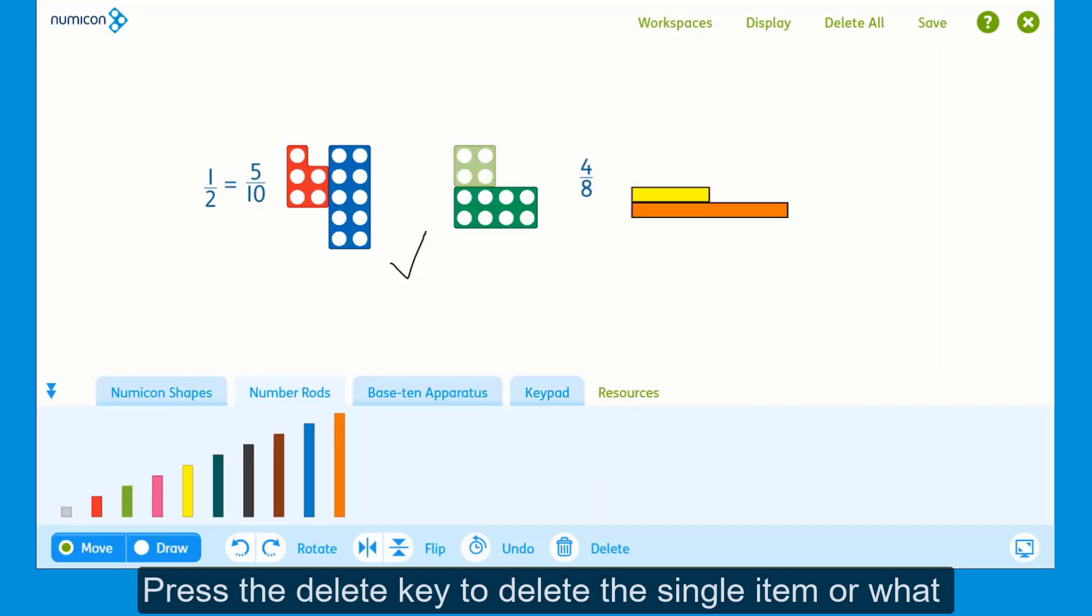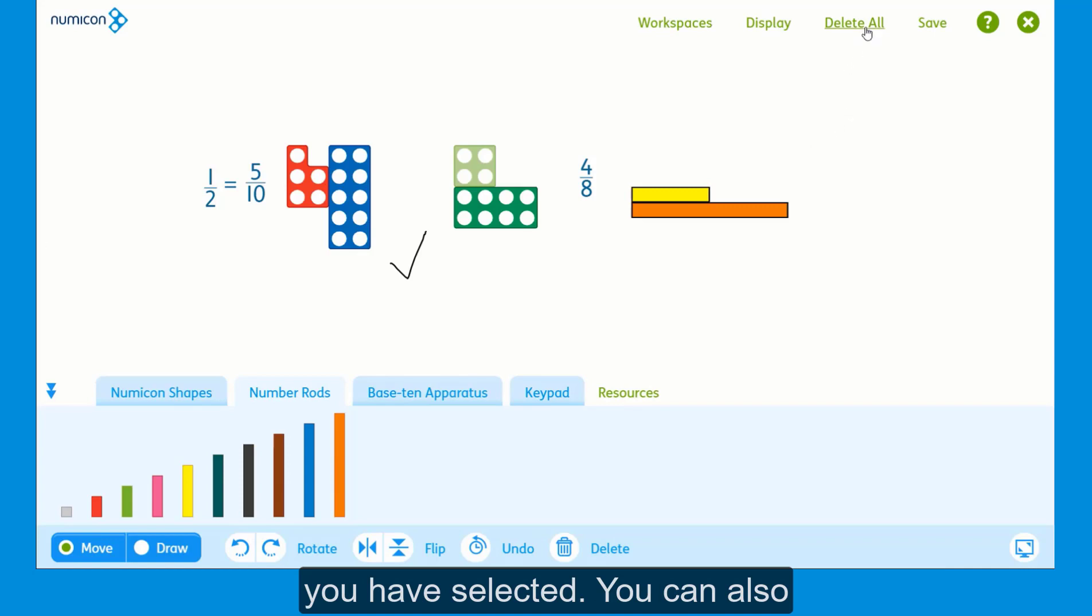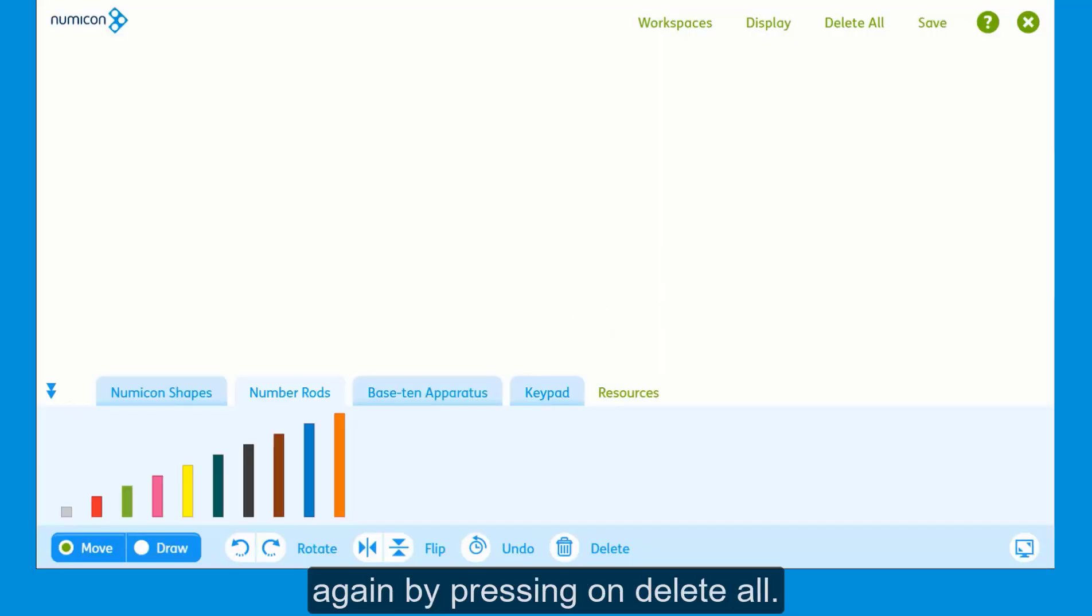Press the Delete key to delete a single item or what you have selected. You can also delete everything from the workspace if you want to start again by pressing on Delete All.